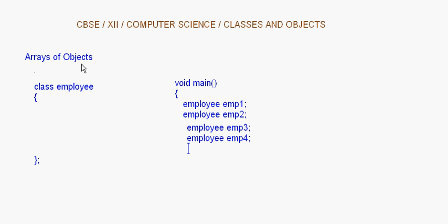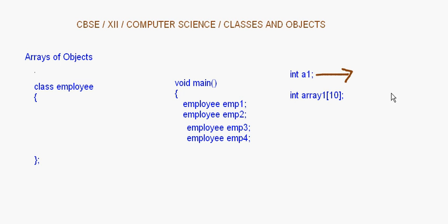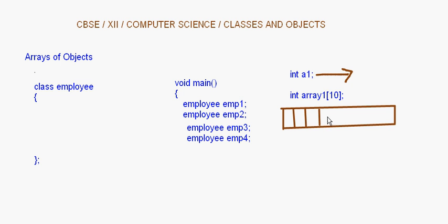In these cases we will have to make an array of objects so that the array can hold the details of 50 employees. We all know that if I write int a1, this is one integer. If I write int array[10], this means it is an array which can hold 10 integers, whereas a single variable stores only one integer.